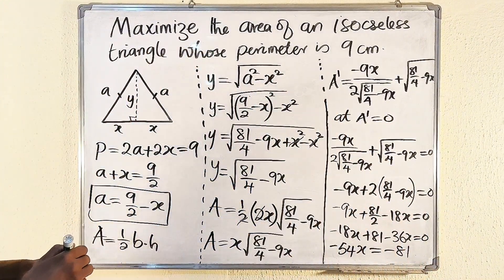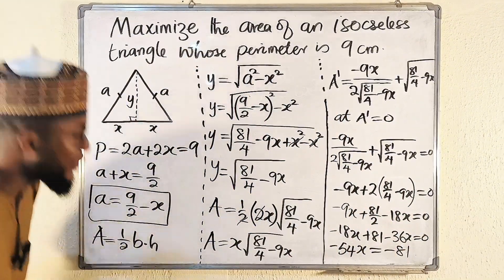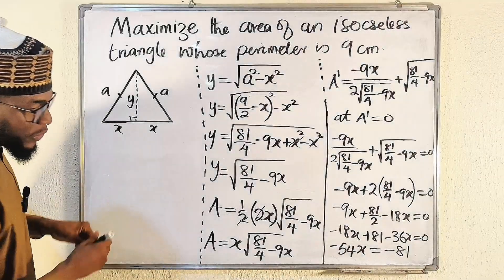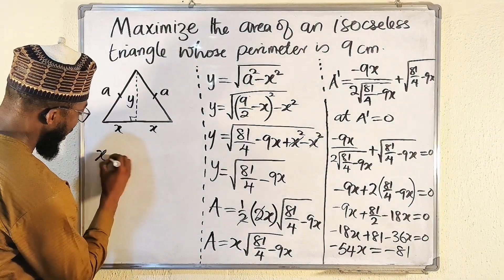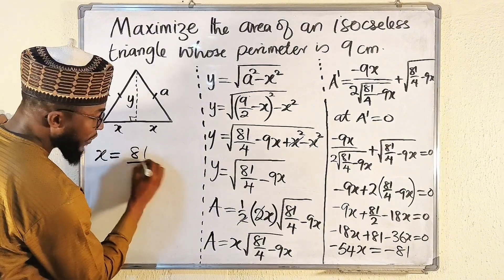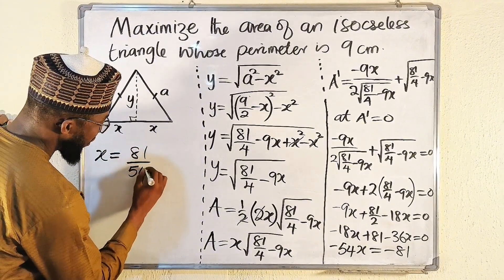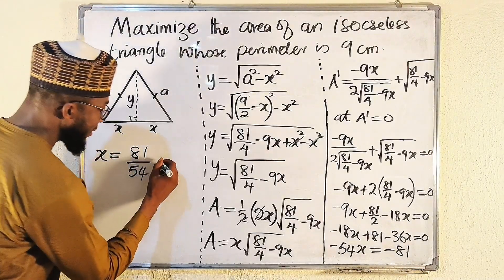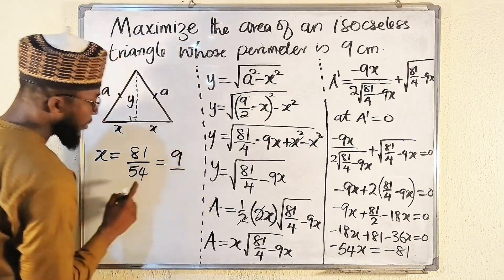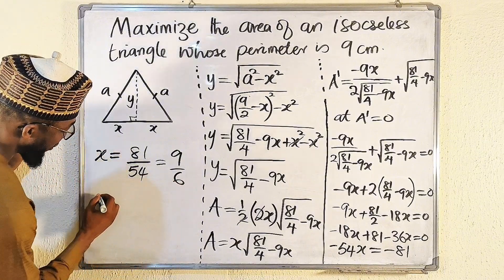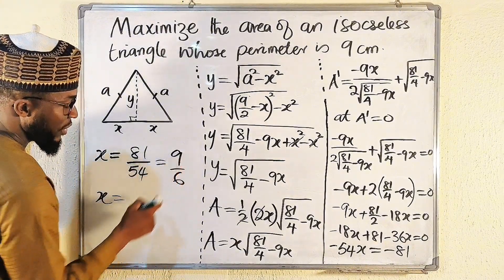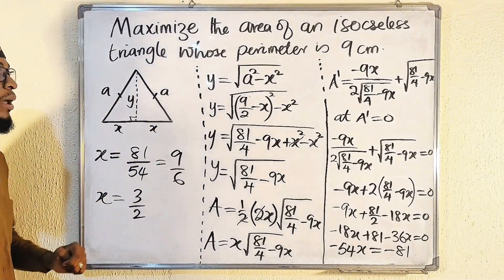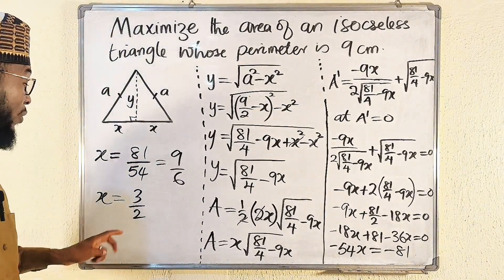Dividing both sides by 54 (negatives cancel): x = 81/54. Simplifying — 9 divides into 81 nine times and into 54 six times, giving 9/6. Then 3 divides into 9 three times and into 6 twice, so x = 3/2.